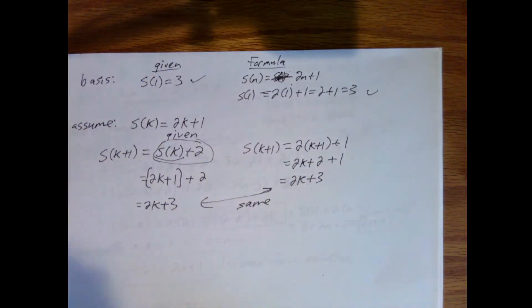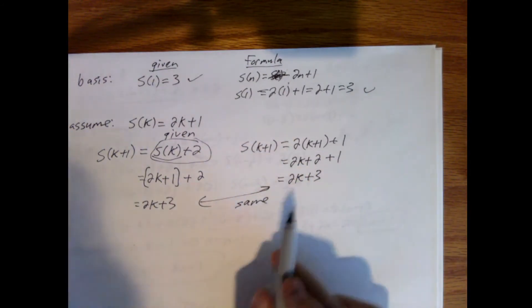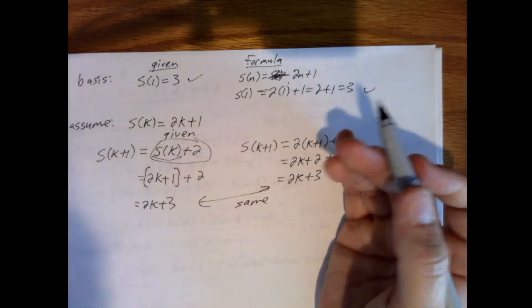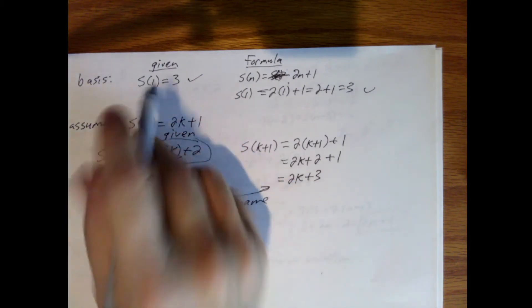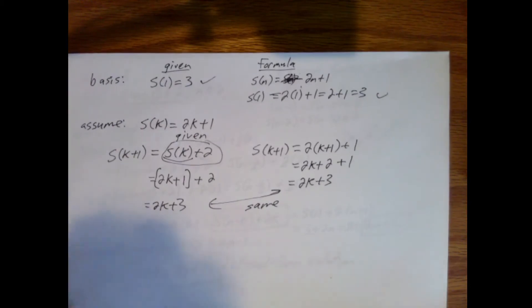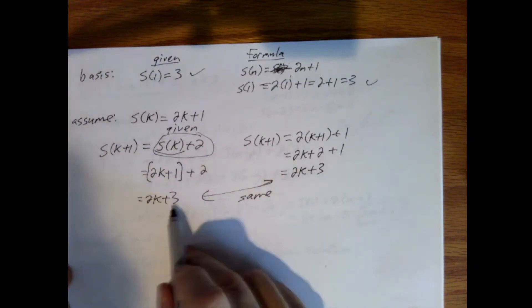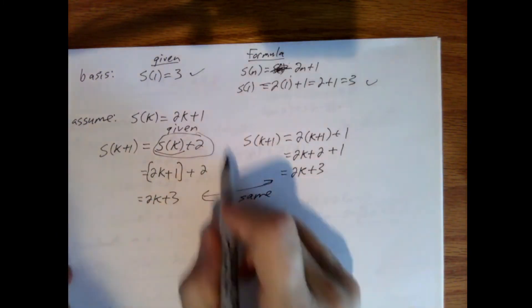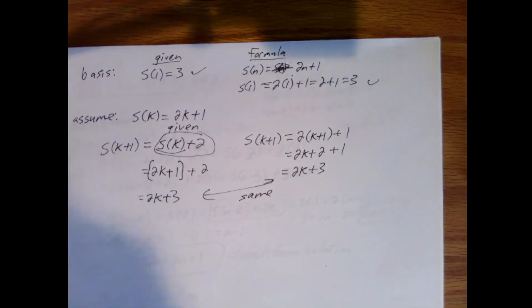On the right-hand side, using the formula directly: s of k plus 1 equals 2 times (k plus 1) plus 1, which equals 2k plus 2 plus 1, which equals 2k plus 3. Those are the same. Therefore, according to mathematical induction, we've proven and verified it. You could also use the formula to produce several values and the original definition by iterating to make sure you get the same thing.